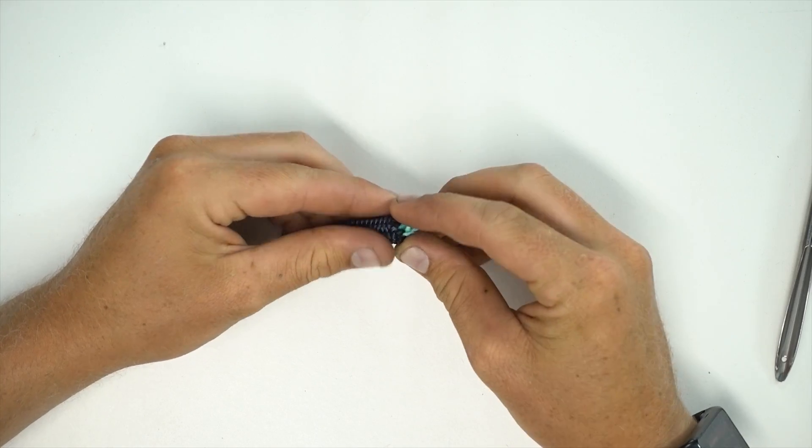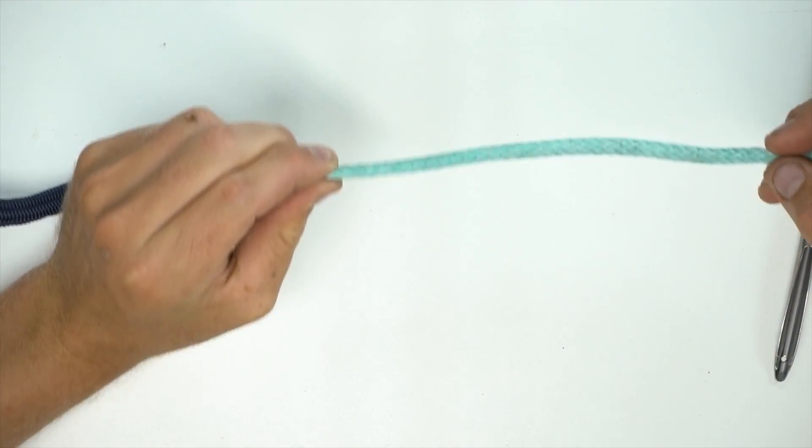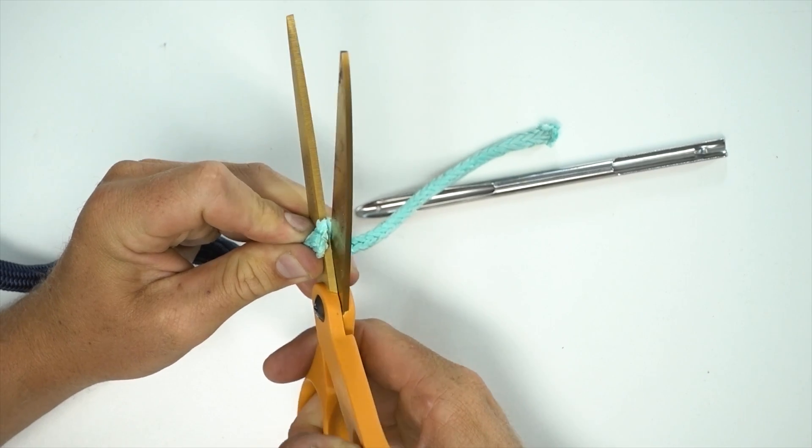Then we remove the cover from the core and cut about 30 to 50 times the rope's diameter of core out of the rope.